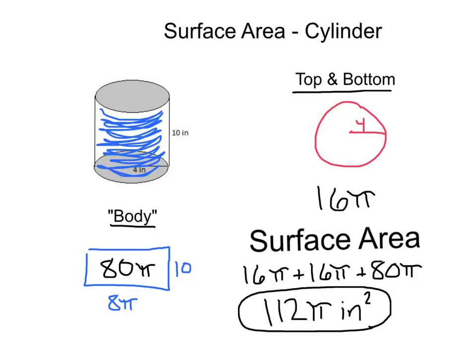And adding up all our pieces, we're going to get 16 pi plus 16 pi for the top and bottom circles, plus 80 pi for this midsection rectangle, giving us a total surface area of 112 pi inches squared.